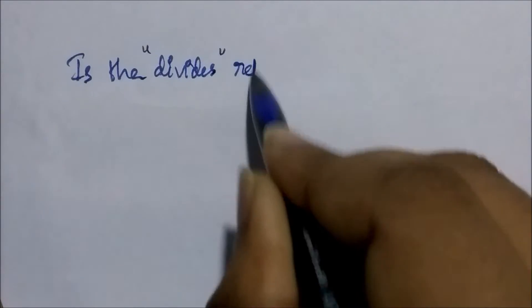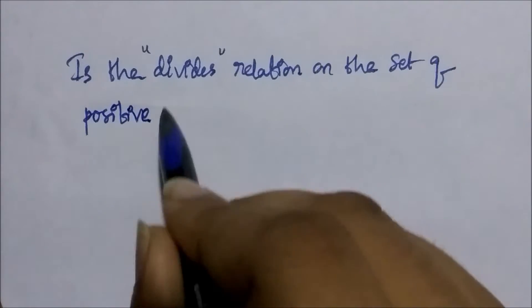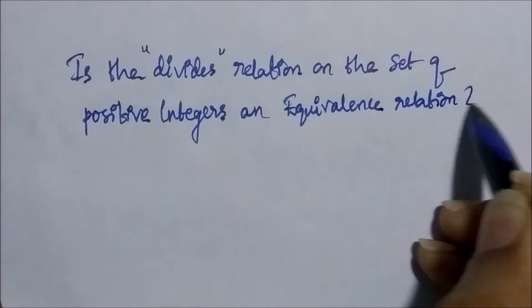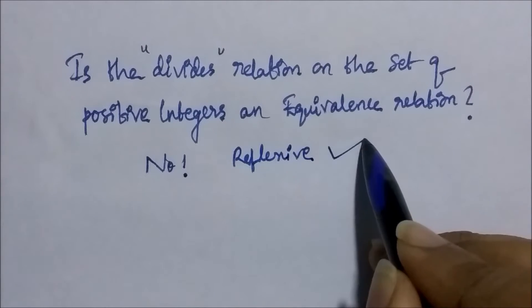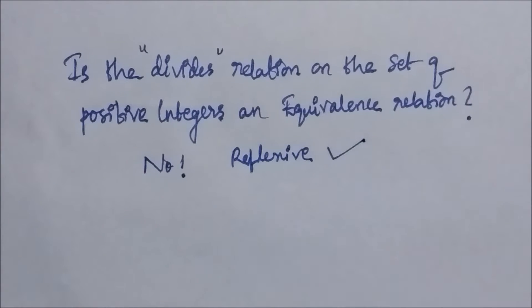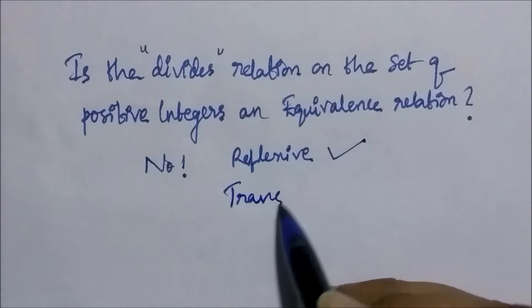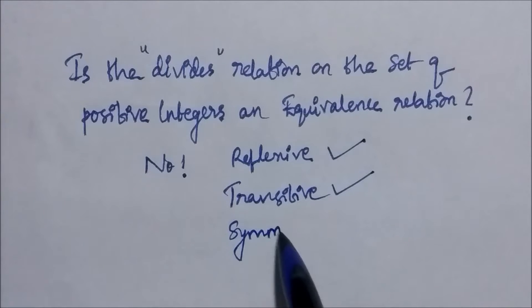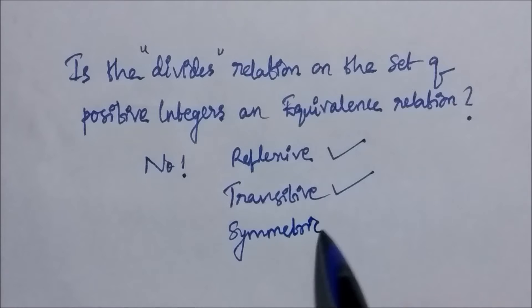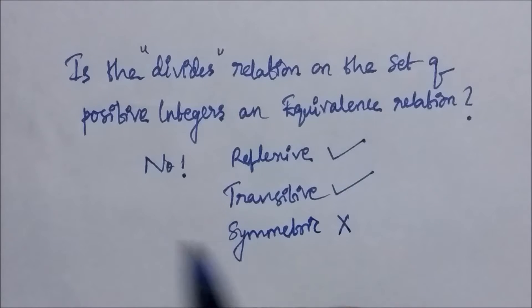Now we ask: is the divides relation on the set of positive integers an equivalence relation? It is not an equivalence relation because, as we have already seen in our types of relation video, the divides relation on the set of positive integers is both reflexive and transitive but not symmetric. Since it is not reflexive, transitive, and symmetric at the same time, the divides relation is not an equivalence relation on the set of positive integers.